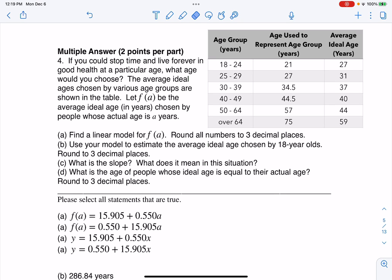All right, so let's take a look at multiple answer number four, and this is where we'll circle all of the correct answers, one for each part. So if you could stop time and live forever in good health at a particular age, what age would you choose? The average ideal ages chosen by various age groups are shown in the table.